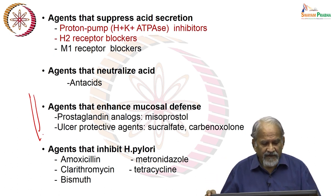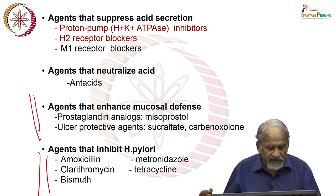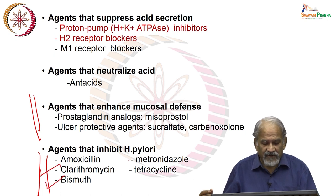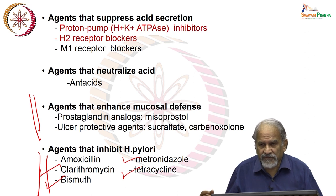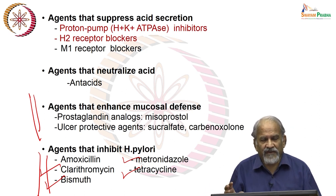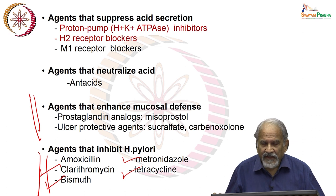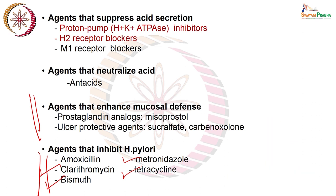For H. pylori, five drugs have been found to be primarily effective: amoxicillin, clarithromycin, bismuth, metronidazole, and tetracycline. Giving these drugs in combination leads to faster and more complete H. pylori eradication, and importantly, reduces relapse. The combination drugs most commonly used are amoxicillin, clarithromycin, bismuth, metronidazole, and tetracycline.